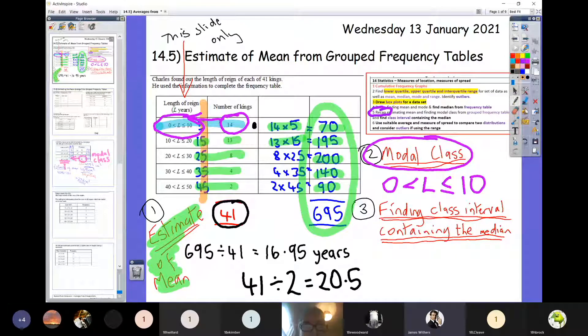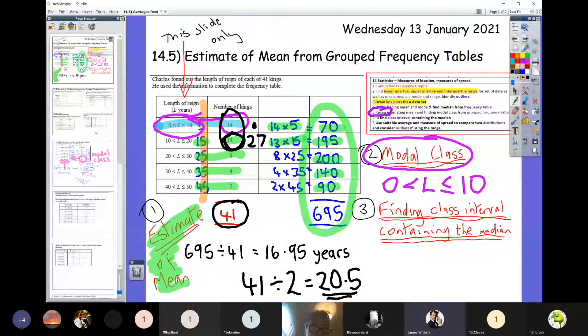How many kings have we now looked at in total? Well that's 14 add 13, just waiting for it to come through, there we go. 14 and 13 which is 27 kings. So have we now got to our middle king, our 20th or our 21st? Yes we have. Our middle king is one of those 13. So our final answer for the class interval containing the median, again we're going to copy out exactly what's in that left hand column, so 10 less than or equal to L less than or equal to 20.